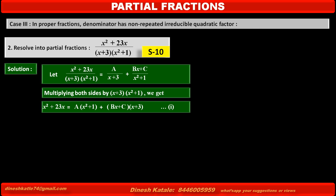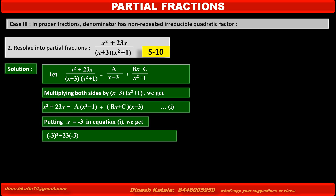Now we have to find the values of A, B, and C. To find the value of A, we cancel the second term by taking x+3 = 0, therefore putting x = -3 in equation 1.